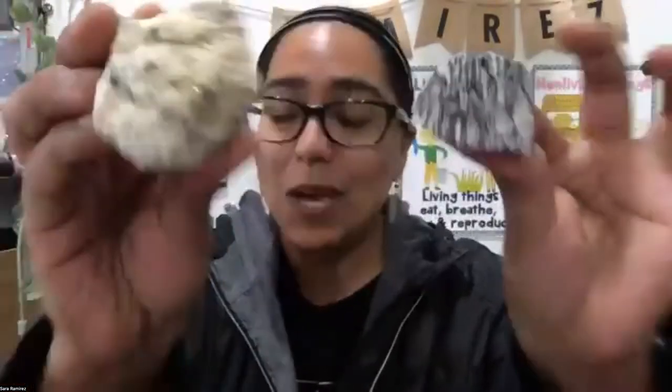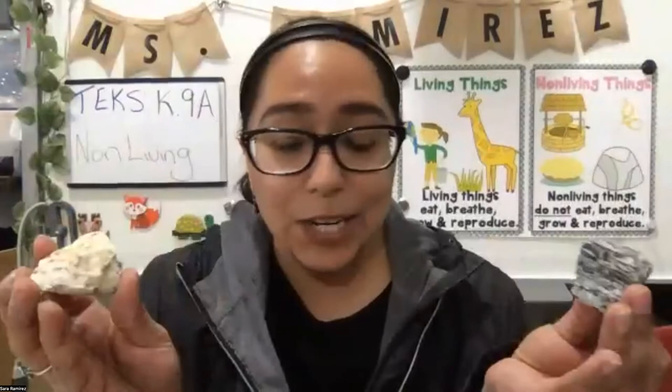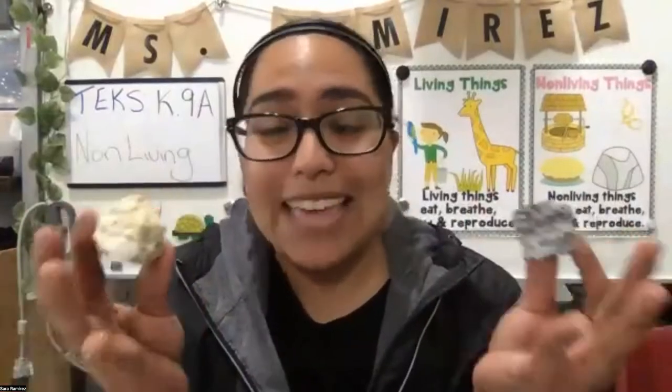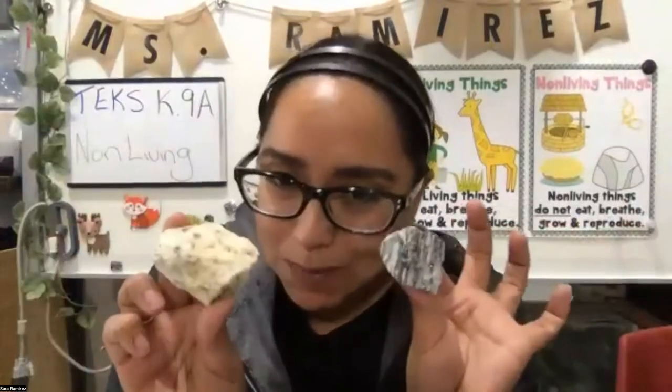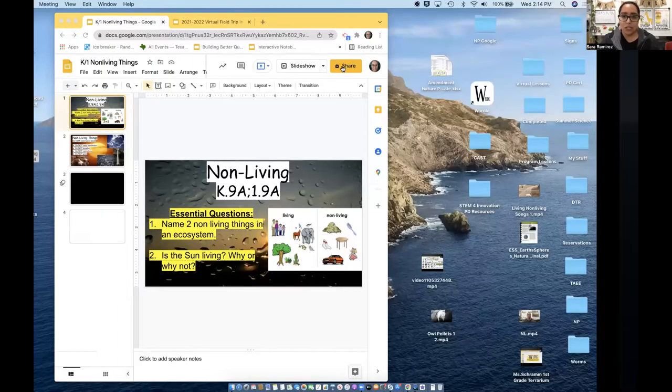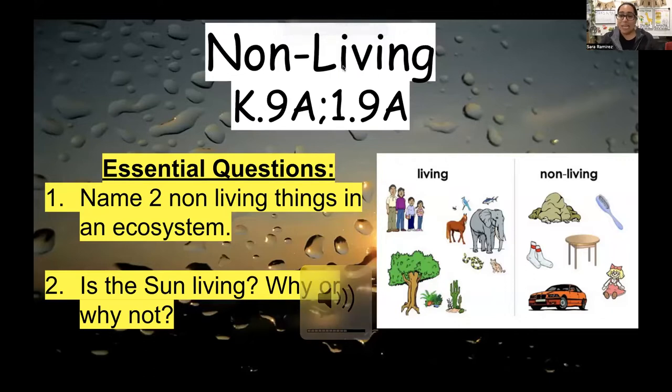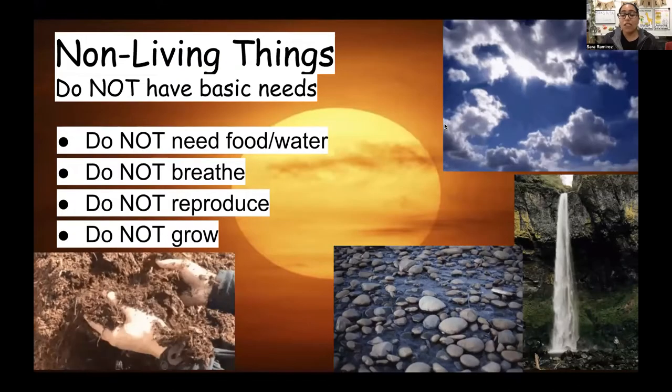Hello, my name is Ms. Ramirez, and in this segment we're going to be learning about non-living things. Here are two of my favorite non-living things — rocks. We know that rocks are non-living because they do not have basic needs. They do not need food or water, they do not grow, and they cannot reproduce or have little baby rocks. We'll look at a quick presentation to learn all about non-living things, and hopefully you'll be able to answer: name two non-living things in an ecosystem, and is the sun living — why or why not?